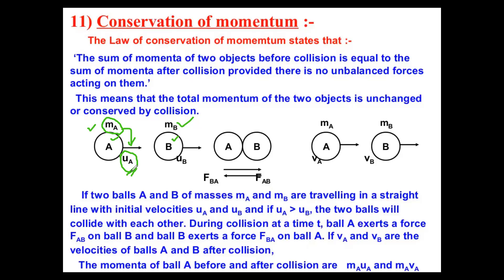The initial velocity of body A is denoted by uA. Similarly, when we consider the second body B, which has mass mB, this body is also moving with initial velocity uB. So mA and mB are the masses of bodies A and B, and uA and uB are their initial velocities.